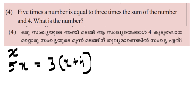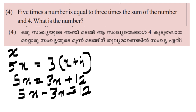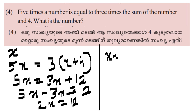So 5x minus 3x equals 12, which gives 2x equals 12. Then x equals 12 divided by 2, which equals 6. The number is 6.